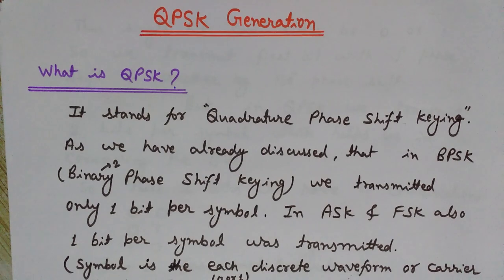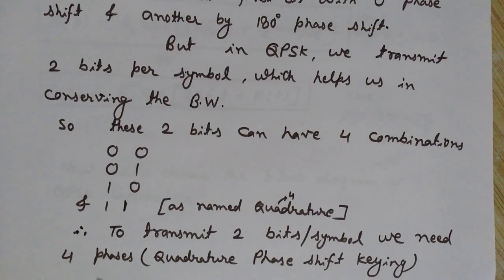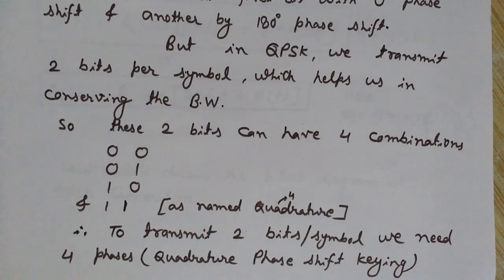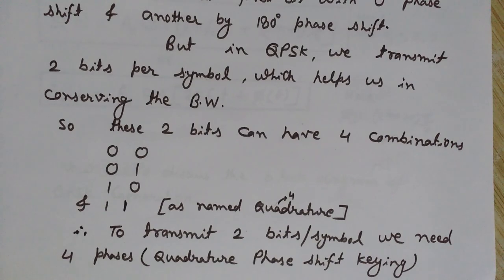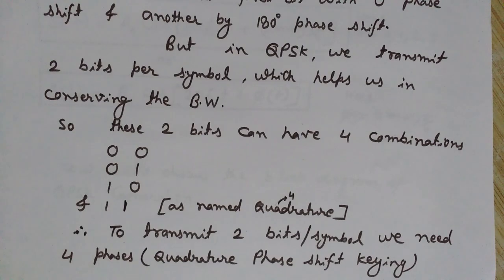The benefit of QPSK is we can transmit two bits in the same bandwidth, so our bandwidth is conserved — we need less bandwidth. This is the advantage of QPSK in comparison to BPSK. Since we are transmitting two bits in one symbol, these two bits can have four combinations: 00, 01, 10, and 11. We need four phases to distinguish these four combinations, which is why it is known as quadrature — we use phase shift keying in quadrature with four phases.